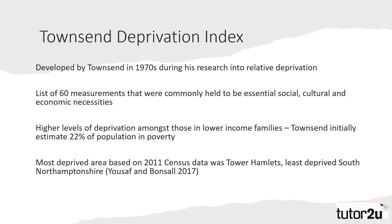In the most recent analysis of 2011 data by Yusuf and Bol, it showed the most deprived area in the UK was Tower Hamlets in London, part of a trend that demonstrated higher levels of deprivation in inner London, particularly amongst areas that were ethnically diverse. Conversely, the least deprived area was South Northamptonshire. While Townsend's initial research was criticised for focusing on subjective measures of deprivation, the more recent usage of census data allows this to be a more objective measure of deprivation in the UK.